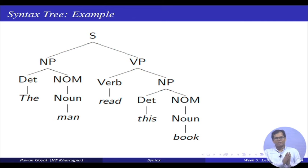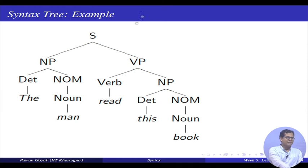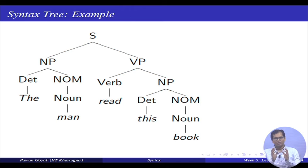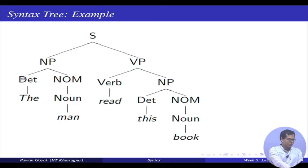Let me give you a simple example. I have the sentence: the man read this book. By syntax, we are trying to find out what are the various groups of words that are coming together. For example, in part of speech tagging, we found out that the word 'the' has a part of speech of determiner, 'man' has a part of speech of noun, 'read' has a verb, and so on.